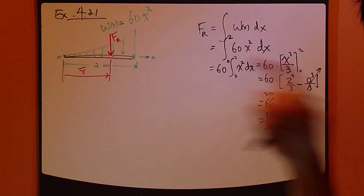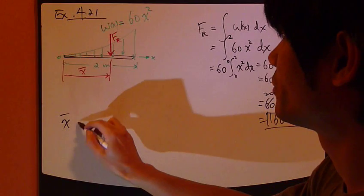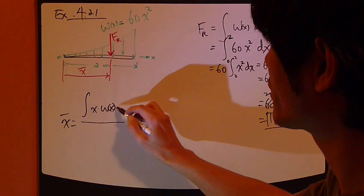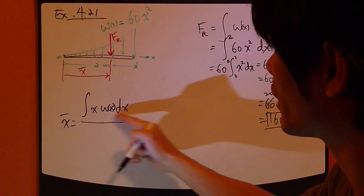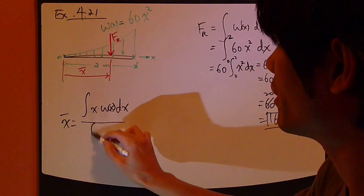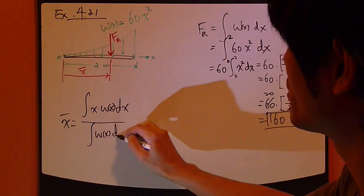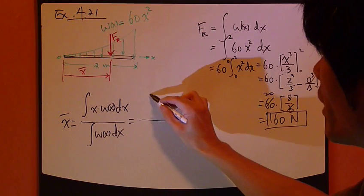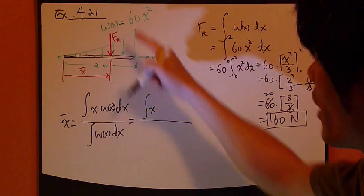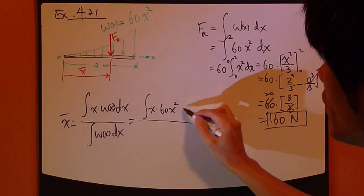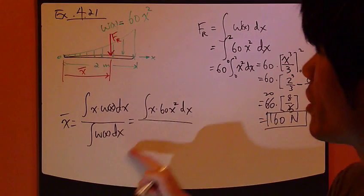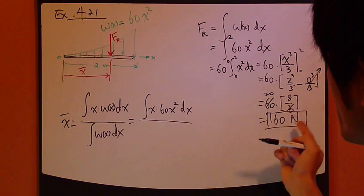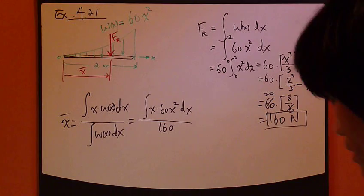Where is this applied? So we need to find x bar. So this equation, x times, this is really dF, divided by integral of wx dx. So again, plug that in. So x times wx is 60x squared dx. Down here, this right here is exactly FR. That's exactly 160 newtons.